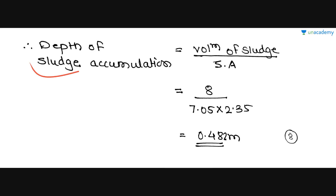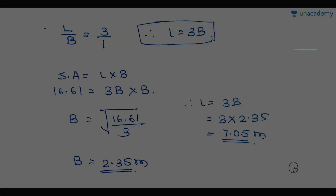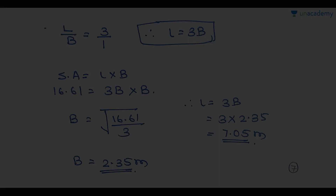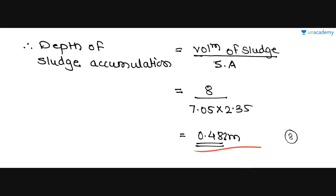Next is the depth of sludge accumulation. Its formula is: volume of sludge / surface area. The volume of sludge (V2) is 8 m³, and the surface area (L × B) = 7.05 × 2.35. So the depth of sludge accumulation = 8 / (7.05 × 2.35) = 0.482 metres.